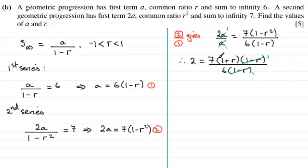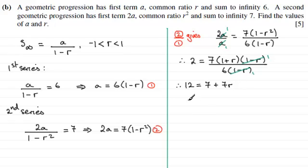So we don't get involved with a quadratic equation. Multiplying both sides by 6, we get 12 equals 7 times 1 plus r, which expands to 7 plus 7r. Subtracting 7 from both sides, 7r equals 5. Dividing both sides by 7, r equals 5 sevenths.